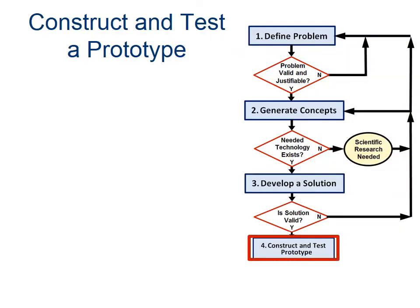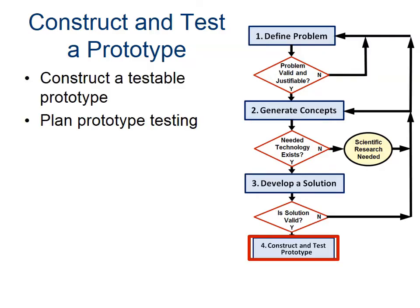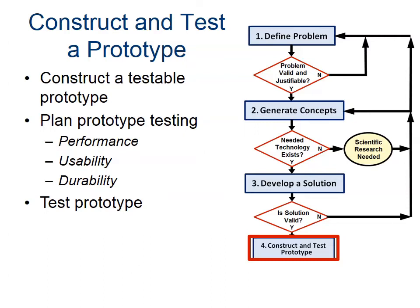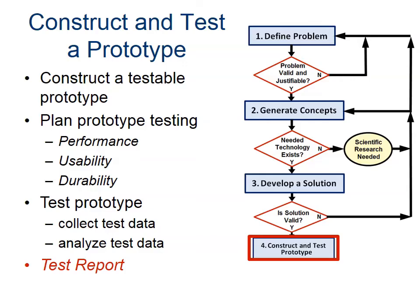Once you've developed your solution, talked to manufacturing, and confirmed you can make it — it's a great concept and a valid problem — you're going to make your prototype. You'll need a plan for that and a big plan for testing. Your testing is going to be tied back to your specifications from the beginning, so it has to be built around your criteria and constraints. If it has to go 50 miles an hour, you better have a test that measures speed. Your deliverable here is a test report — you collect all the data, analyze it, and write a summary to tell your customers, your boss, and your fellow engineers whether this is a good solution.